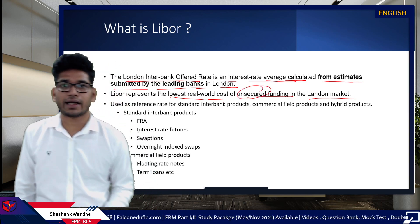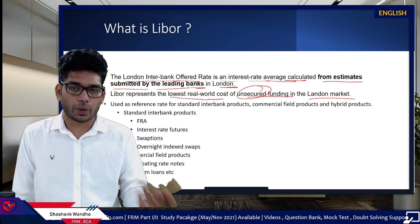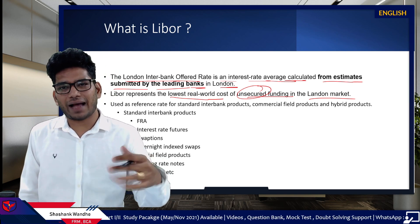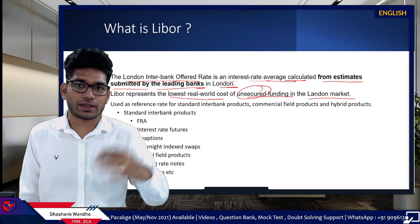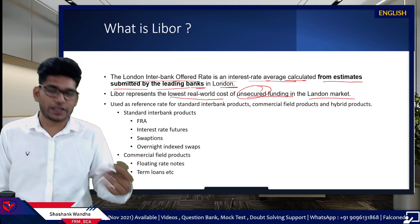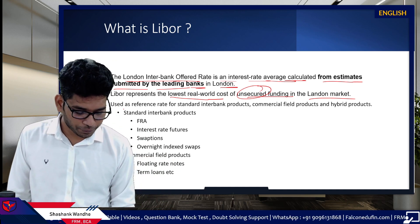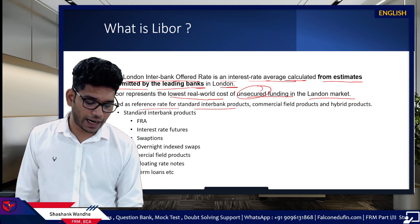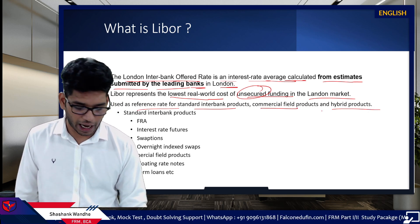Unsecured is generally considered risky, but here the logic is that it won't affect things much because the leading banks are not likely to default — these are big banks and loans will be recovered. From that perspective it is considered a reasonable rate. It is used as a reference rate for standard interbank products, commercial field products, and hybrid products.